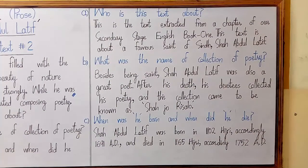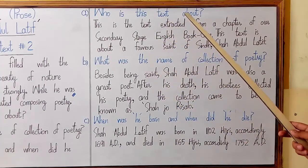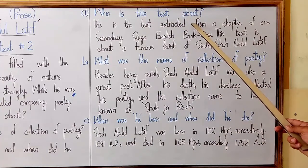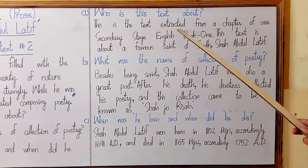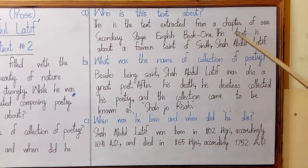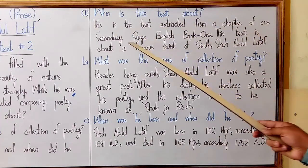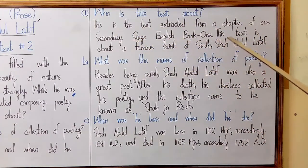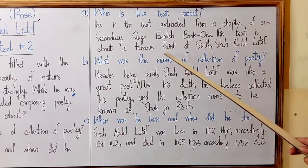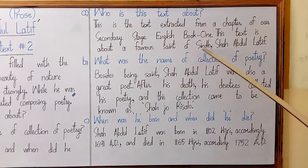Question number 1 — Who is this text about? The answer is: this is a text extracted from a chapter of our secondary stage English book 1. This text is about a famous saint of Sindh, Shah Abdul Latif.